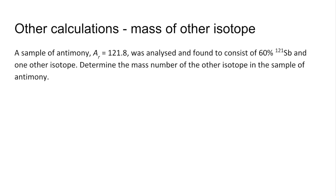Another type of calculation is calculate the mass of the other isotope. So this time we've been given the relative atomic mass, and we're told it's got 60% of antimony 121, and one other isotope. So we've determined the mass number of the isotope in the sample. So again, if you want to pause and have a go. The formula, by the way, is exactly the same. We're just using it slightly differently.